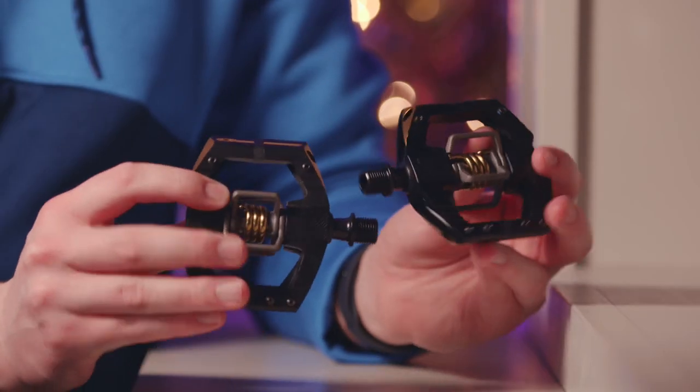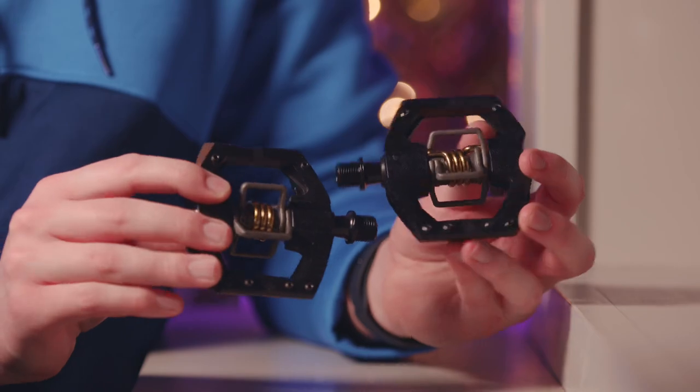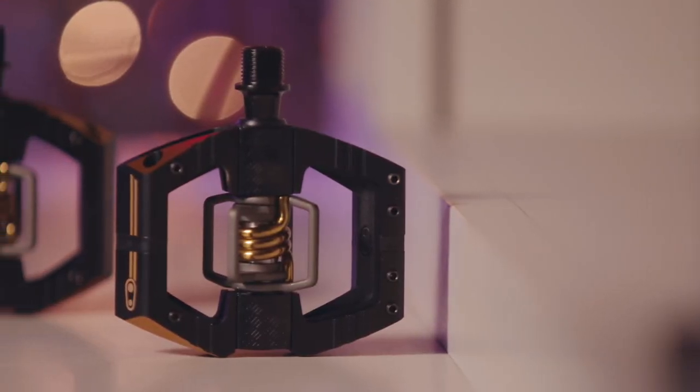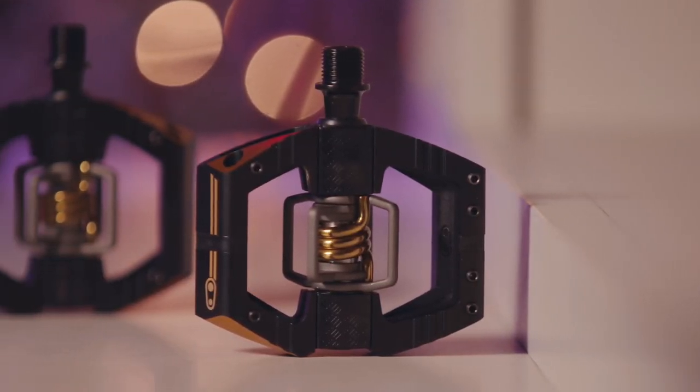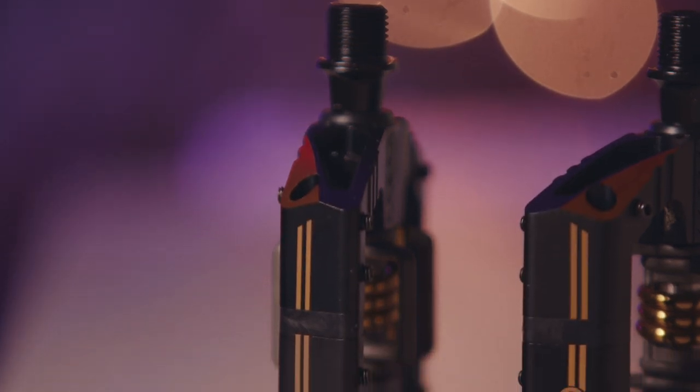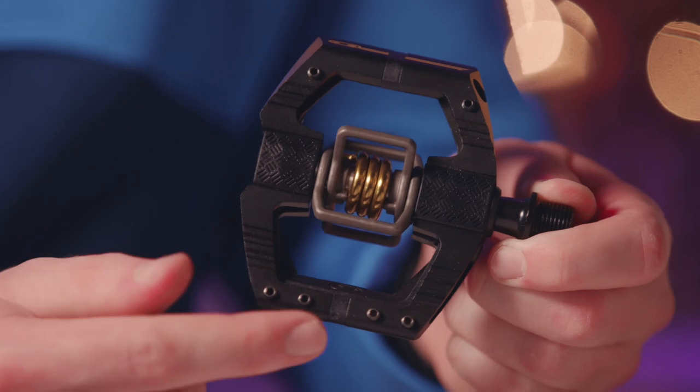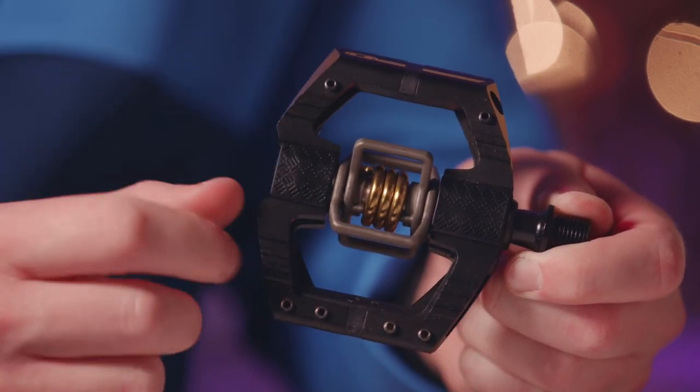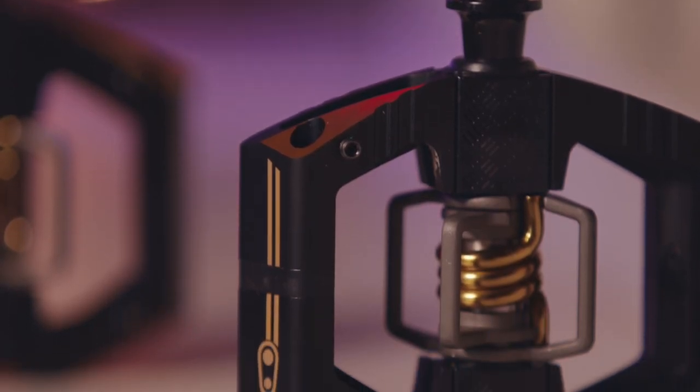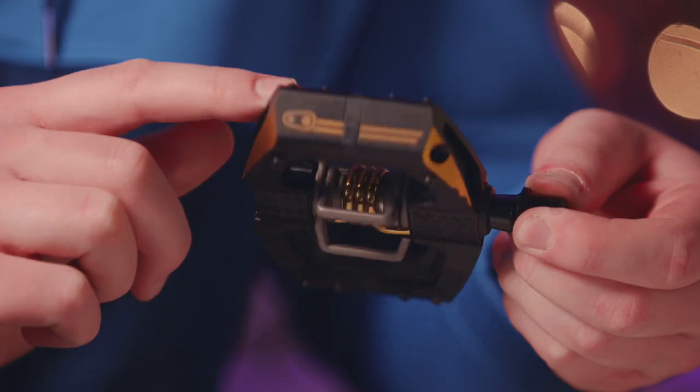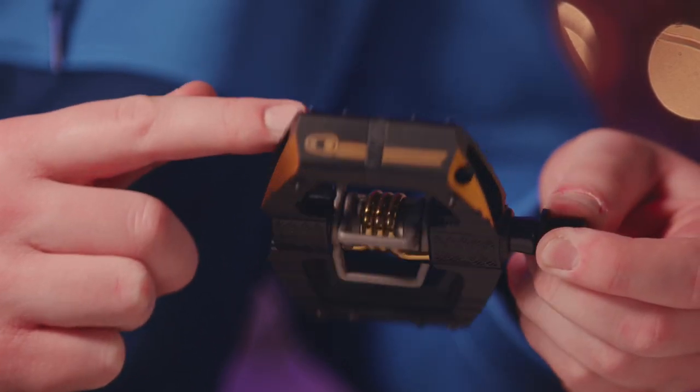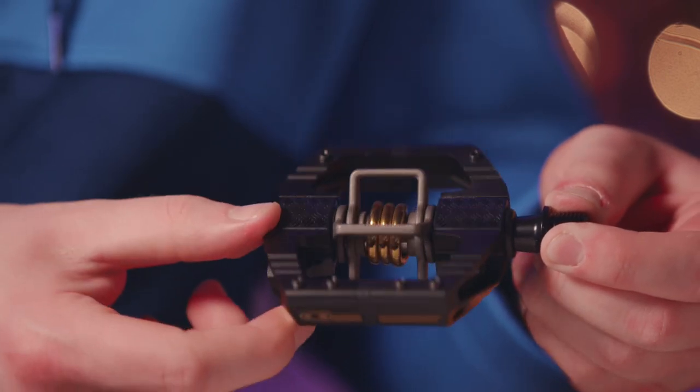These Crank Brothers Mallet E11 are a premium pedal and pack in a lot of performance. Designed for endurance racing at the highest level, they use titanium wings and dual chamfered edges to reduce weight, plus six adjustable pins per side to add grip. The lightest Mallet pedal ever made, they have four-sided entry for superb mud shedding and customizable float and release angle. They look top dollar too.